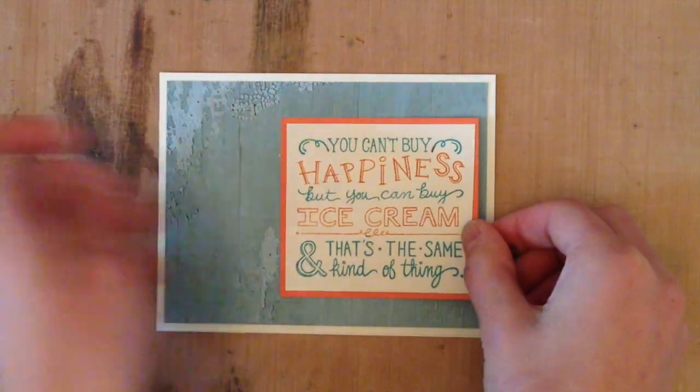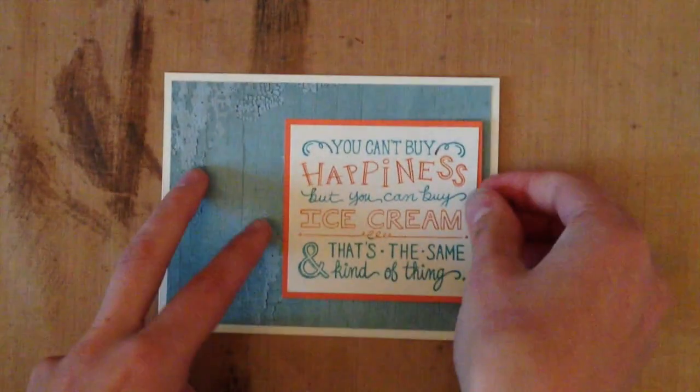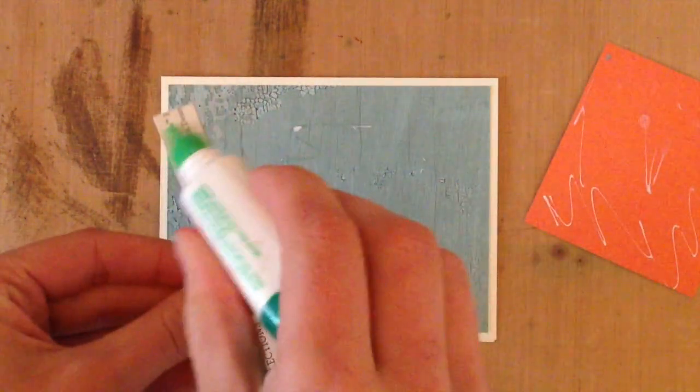Next up I wanted to add the sentiment to the actual card. So I used some Tombow Mono Glue, but before I wanted to lay that down I wanted to add a zip strip.